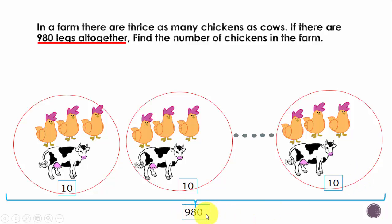Now let's note down: the total number of legs is 980. Each group has got 10 legs. So it's a typical division statement whereby how many tens, which means how many groups are there in 980.